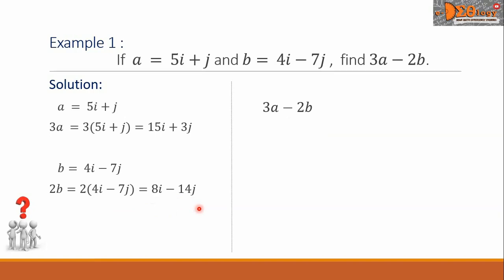Now, let us substitute the corresponding values here. The 3a is the quantity 15i plus 3j minus the 2b is the 8i minus 14j. Removing the grouping symbol, we will have 15i plus 3j minus 8i plus 14j.